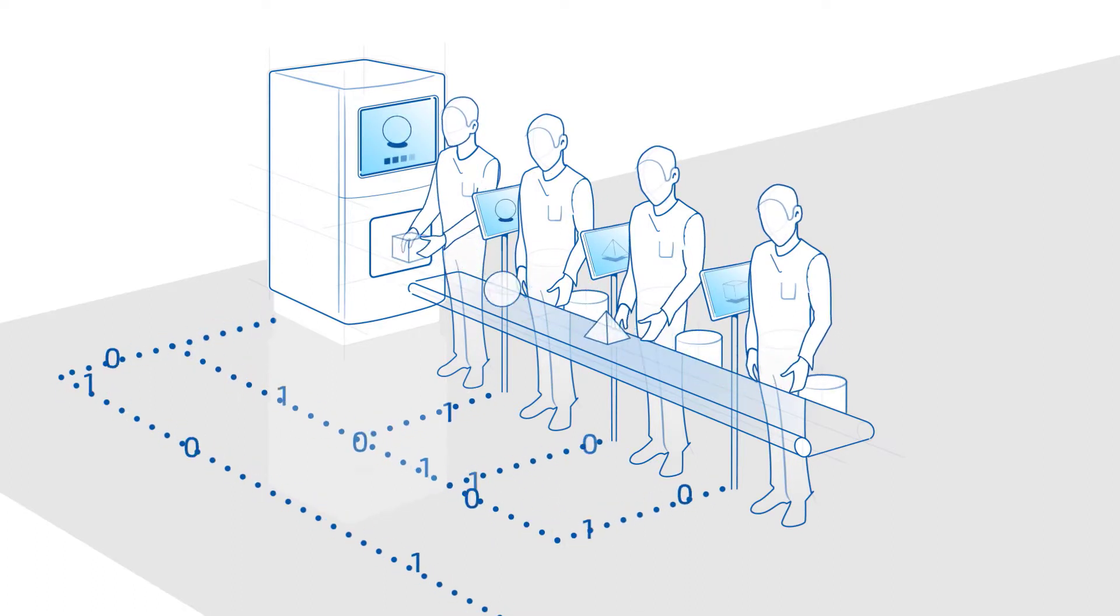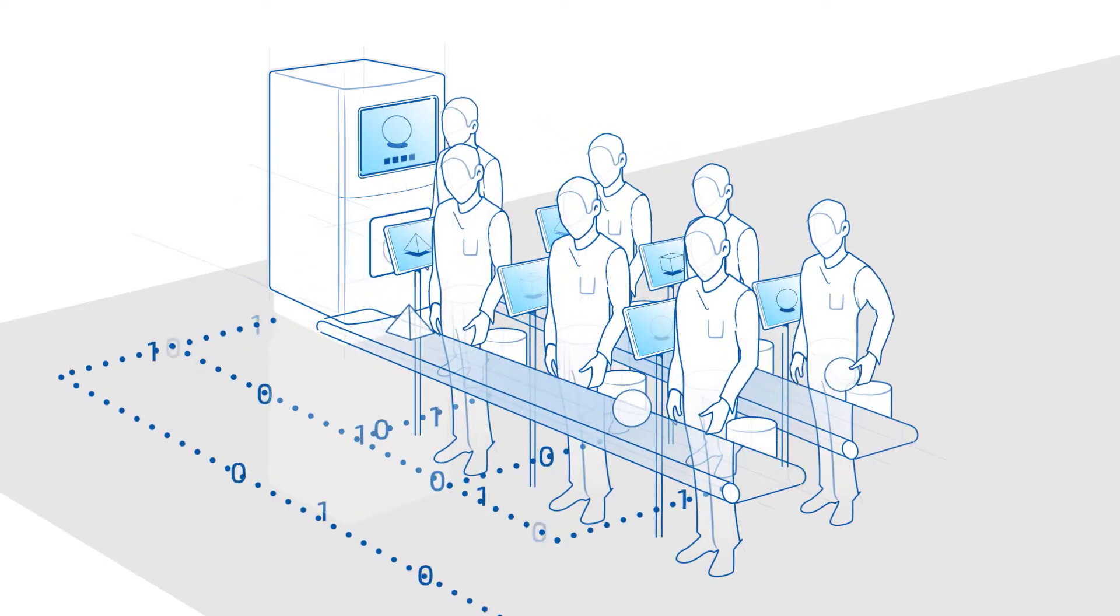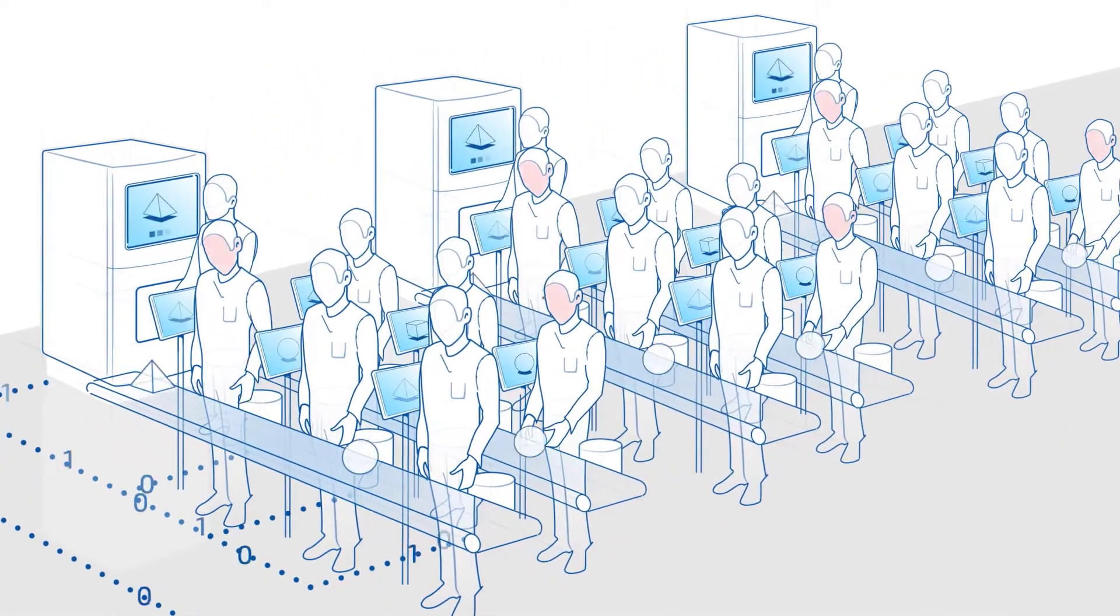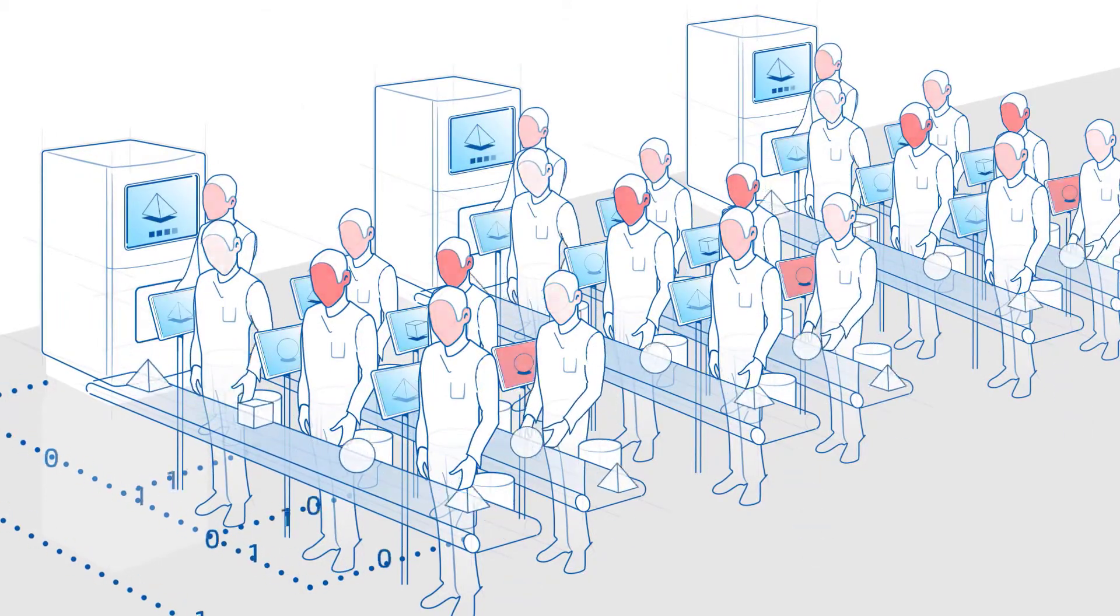Especially all the manual sorting doesn't scale at all. Labor costs increase exponentially, space becomes a big problem, working conditions get poor, and people start making mistakes.